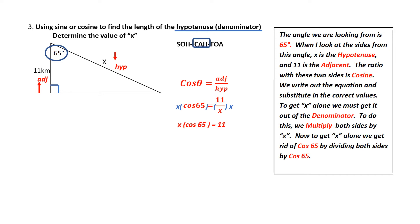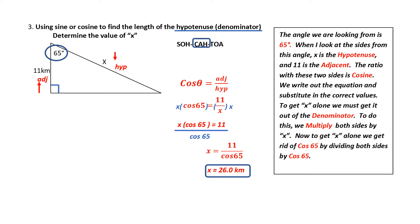I now need to get x alone. How do I get rid of cos of 65? x is being multiplied by cos of 65, so I am going to divide both sides by cos of 65. This allows the cos of 65s to cancel on the left-hand side, leaving me with x is equal to 11 divided by the cos of 65. Punching this into an on-screen calculator: 11 divided by the cos of 65 equals, giving me an answer of x is equal to 26 kilometers.